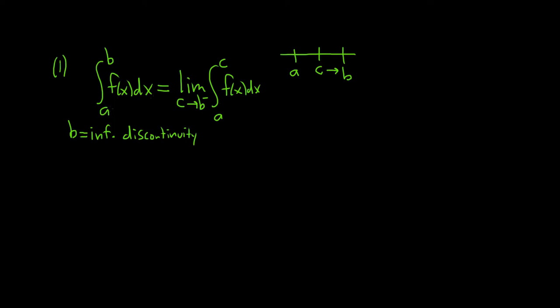I suppose you could think about it. If c is a number between a and b, and b is bigger, then obviously c is approaching from below or from the left. Personally, I like to draw the picture every time and say, OK, here's c, we're approaching b. Oh, OK, we're approaching from the left.